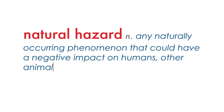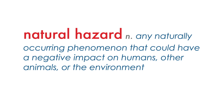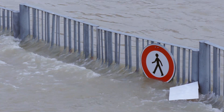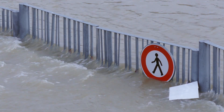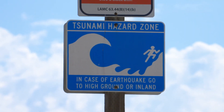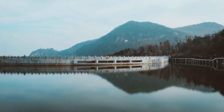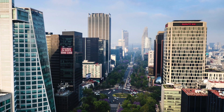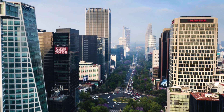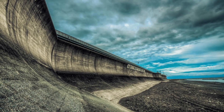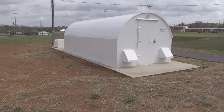A final factor worth discussing that affects human activity around the globe is the occurrence of natural hazards. A natural hazard is any naturally occurring phenomenon that could have a negative impact on humans, other animals, or the environment. Examples include droughts, wildfires, flooding, earthquakes, volcanic eruptions, severe weather, hurricanes, tornadoes, and tsunamis. The human species is often forced to adapt their activities to overcome natural hazards when they occur. For example, reservoirs in the arid American West are built to store water in case of droughts. Skyscrapers in Mexico City are constructed to withstand the violent shaking of earthquakes. Sea walls, such as those in Japan, are constructed to protect coastlines against 50-foot tsunami waves. Storm shelters are common in the Midwestern United States in the event of tornadoes.